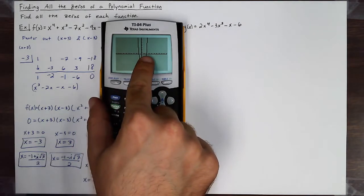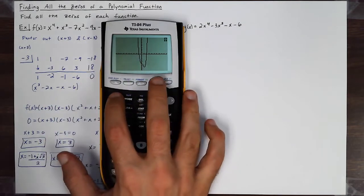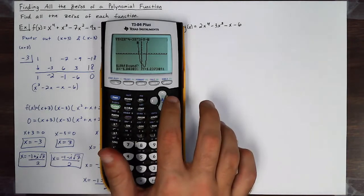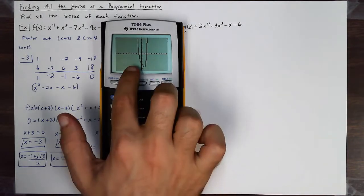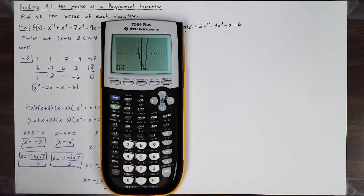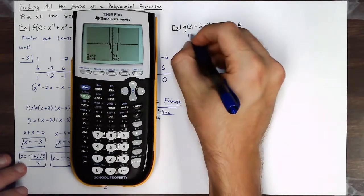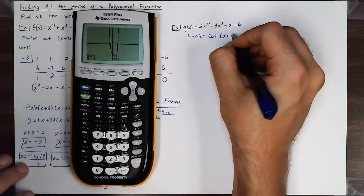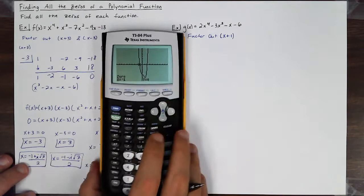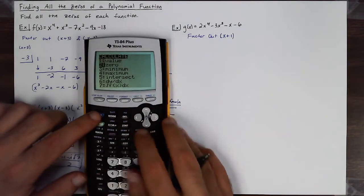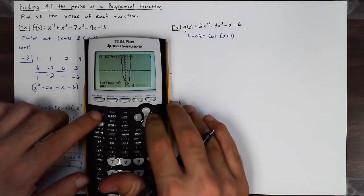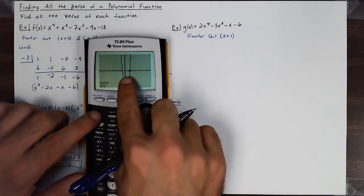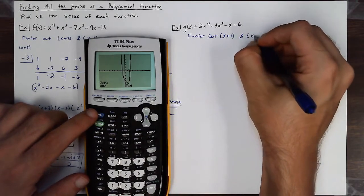I can see it crosses the x-axis twice. Using the zero feature — going left of it, then right of it and hitting enter — one zero is at negative 1. So I'm going to need to factor out (x+1), since that's where that zero comes from. The other zero is at 2, so I'll also factor out (x-2).